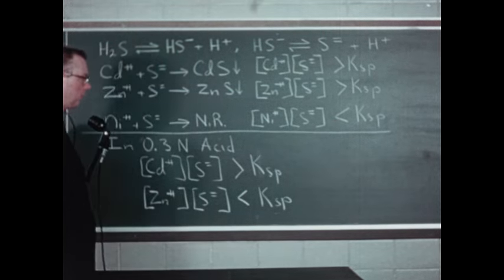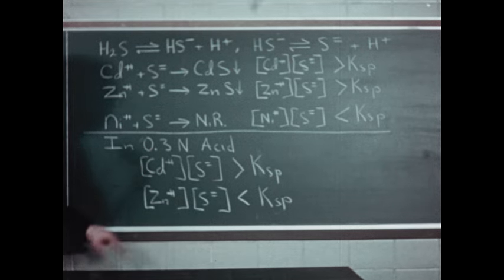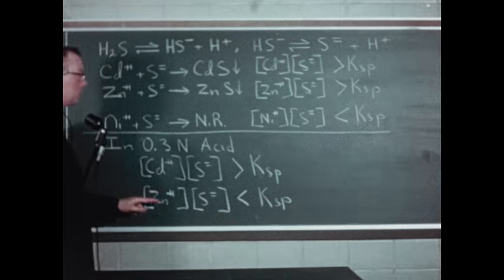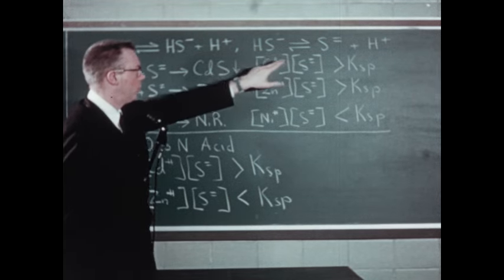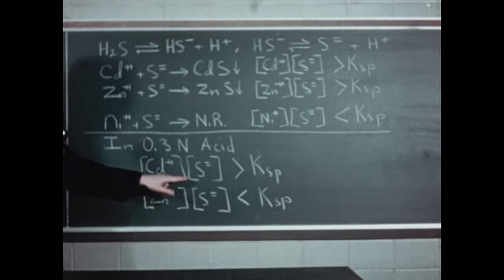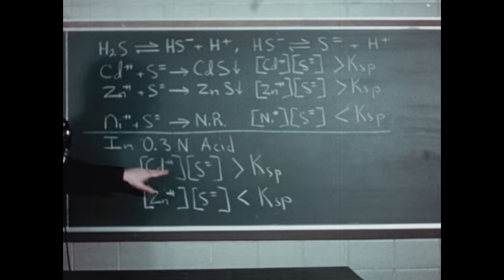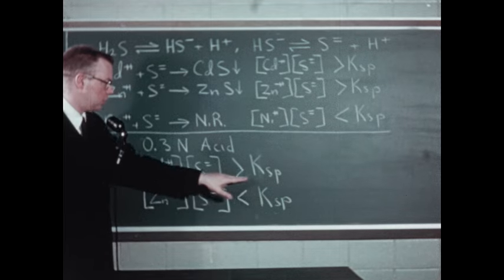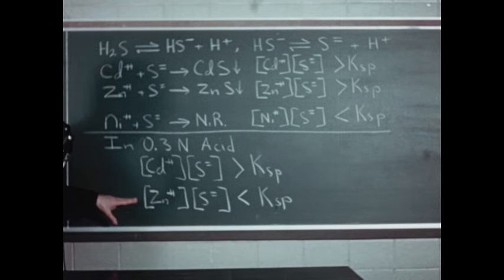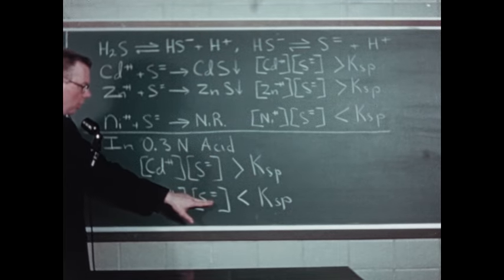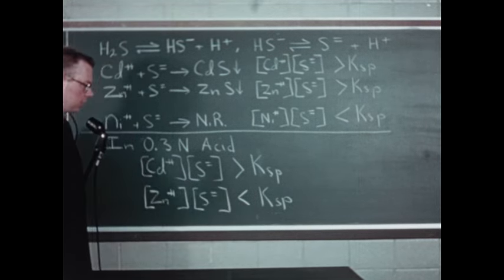This in turn must mean that the product of the concentration of the nickel ion and the sulfide ion was less than the solubility product constant for nickel sulfide. Then we studied the reactions of cadmium and zinc in three-tenths normal hydrochloric acid solution. In a three-tenths normal acid solution, the hydrogen ion concentration is fairly large, and therefore the ionization of the HS⁻ ions is repressed and fewer sulfide ions are present. Under those circumstances there was still a sufficient quantity of sulfide ion to cause the precipitation of cadmium sulfide — so the concentration of cadmium ion times sulfide ion concentration must still have been larger than the solubility product constant for cadmium sulfide. With zinc ion, however, no precipitate occurred under these conditions, so the reduced sulfide ion concentration — made small by the presence of the acid — was in fact so small that its concentration times the zinc ion concentration was now less than the solubility product constant for zinc sulfide.